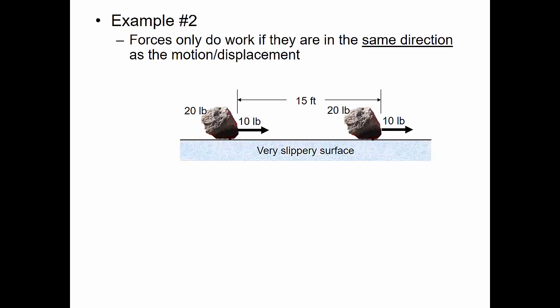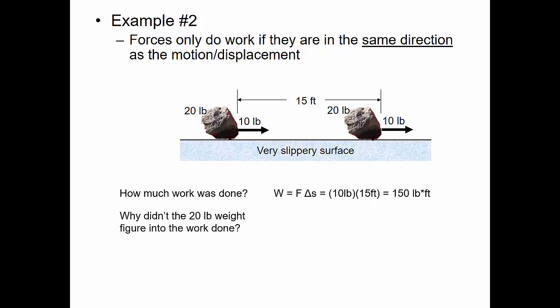Forces only do work if they're in the same direction as the motion or displacement. Now I have a twenty-pound rock on a very slippery surface; I pull on it with ten pounds and it moves fifteen feet. Work equals force times displacement: ten pounds times fifteen feet equals 150 pound-feet. Why didn't the twenty-pound weight factor in? Because it's in a different direction than the displacement — there's no vertical displacement, only horizontal — so the twenty pounds doesn't contribute to the work.